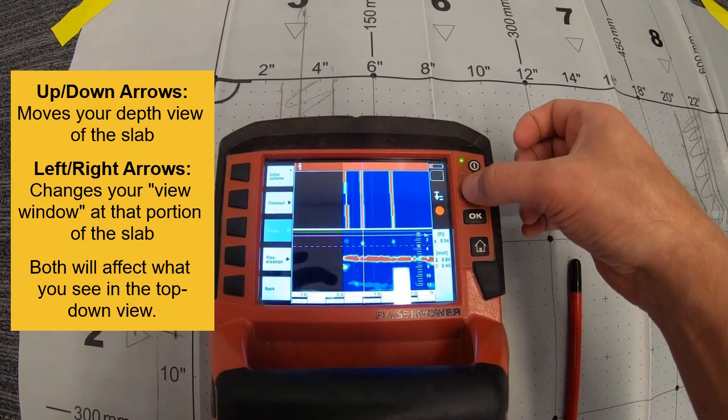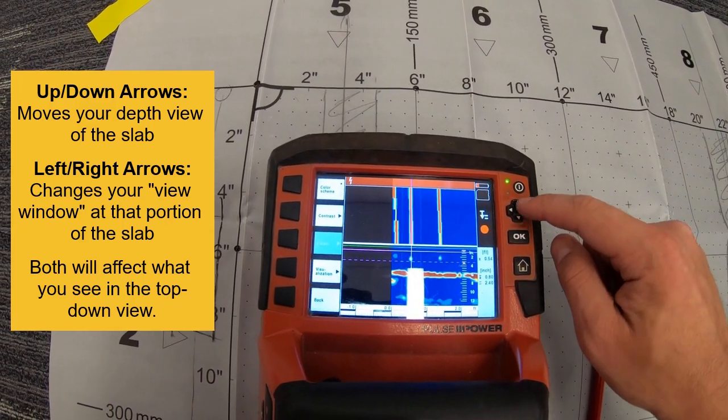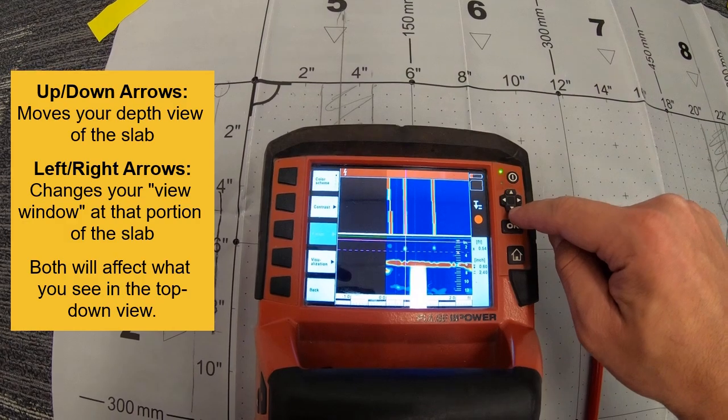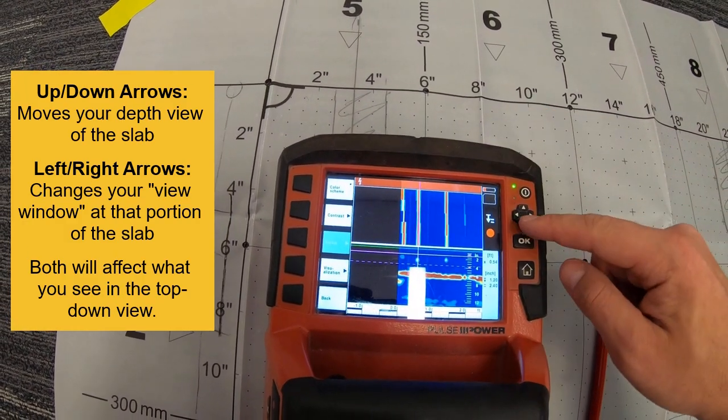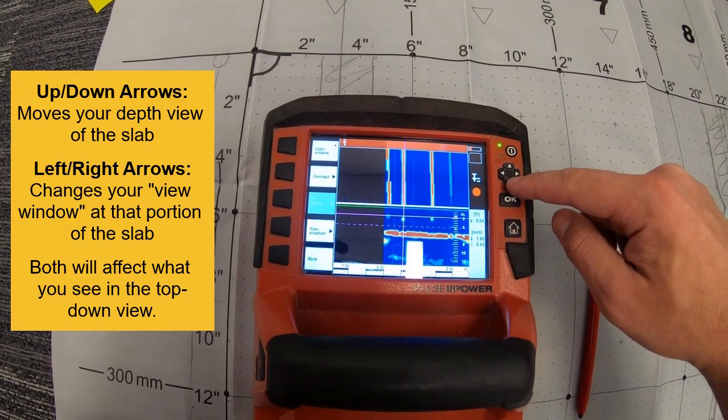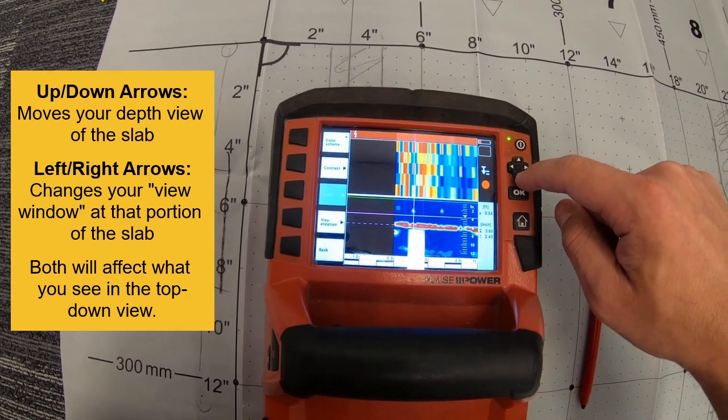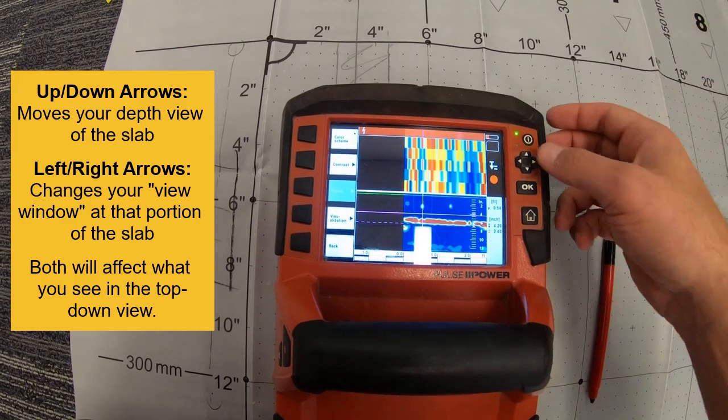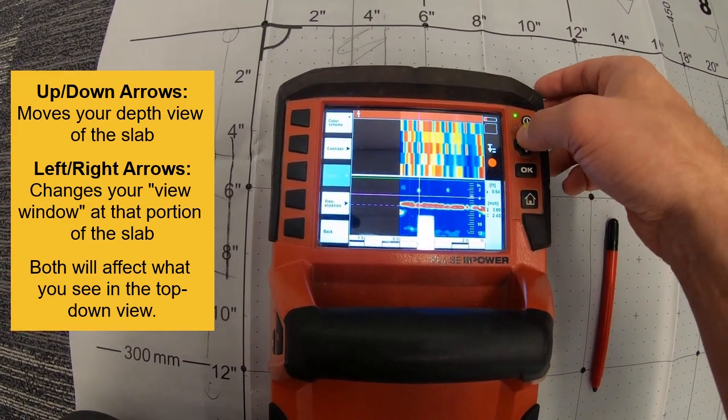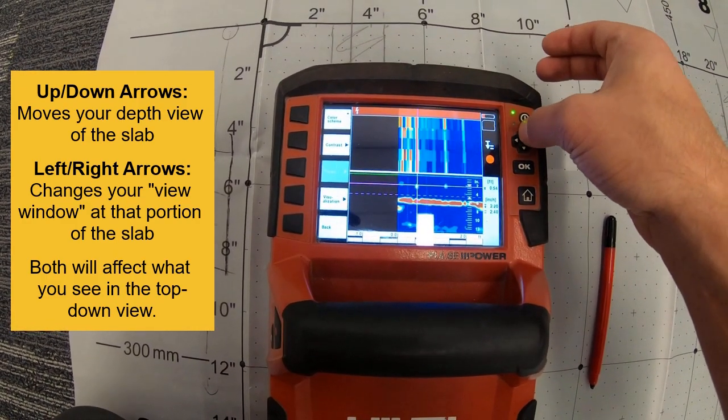This D-pad here is your friend. The up and down markers are going to move your top down view. So as I go down, watch how those rebars go away as I go deeper. I'm going deeper, deeper, deeper into the slab. And now I'm getting this as my top down view, which is just a bunch of mumbo jumbo. I'll go back up, and you'll see them reappear. Okay? That helps you go up and down through the slab.